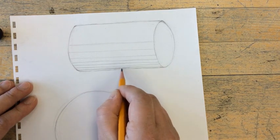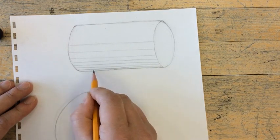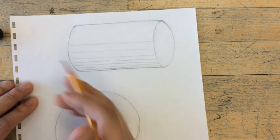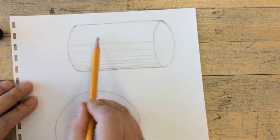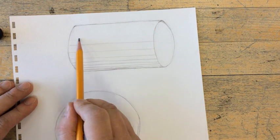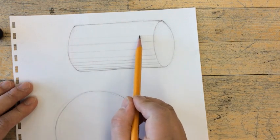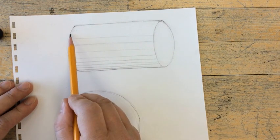I'm going to loosely draw my lines first, then go back in and restate the lines that I need, erase the marks that I don't want. The same thing here gets applied to the other side of the cylinder.